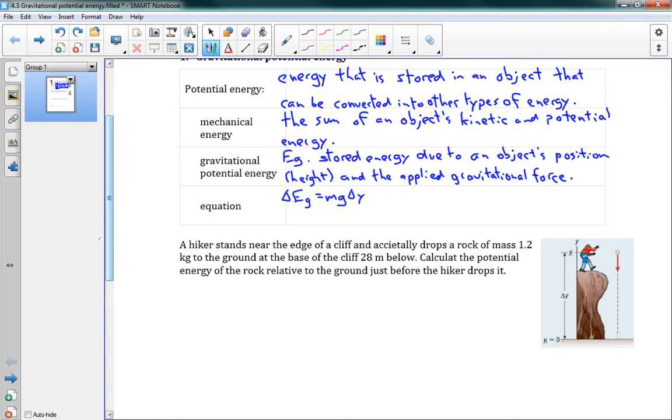You might have seen something different. You might have seen EG equals MGH. We're going to write it this way. Now I'm writing it as a delta. Delta EG. That means this is a change in gravitational potential.